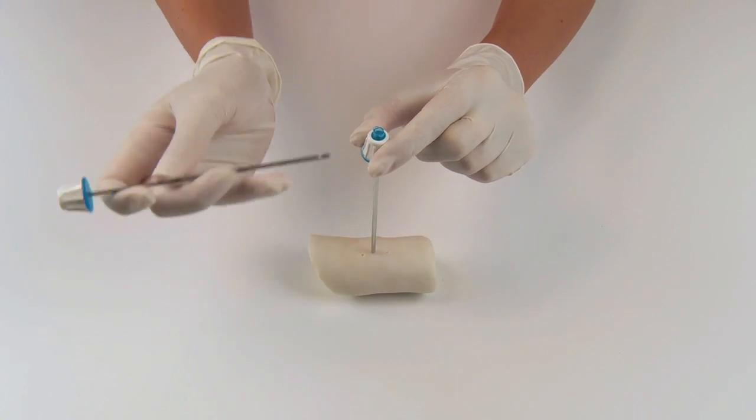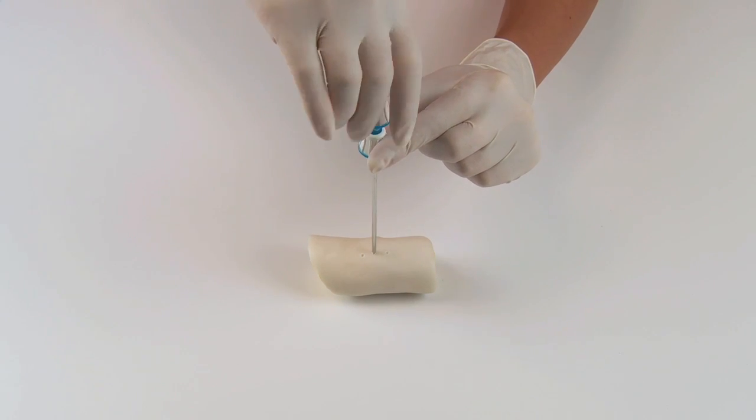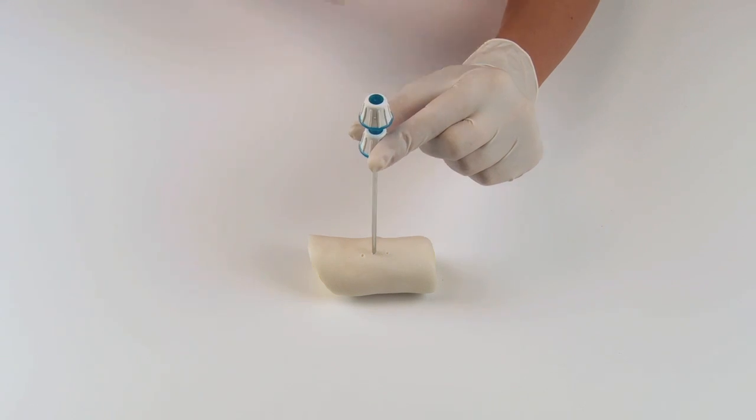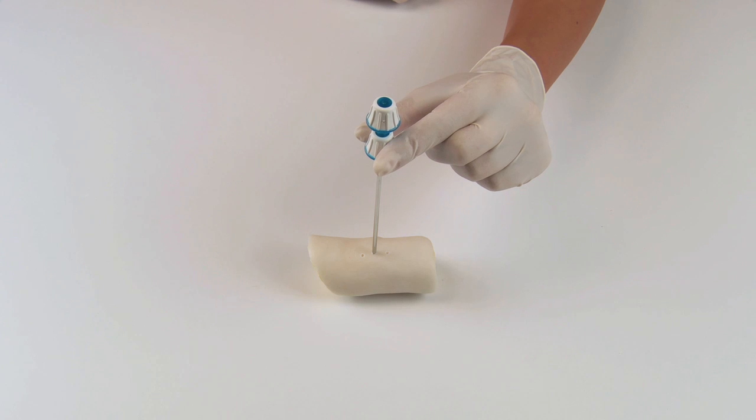Insert the eccentric drill into the penetration cannula and rotate it a few turns until the drill tip makes purchase on the bone. Verify the position and direction of the drill with diagnostic imaging. It is very easy to correct the position and direction at this point.